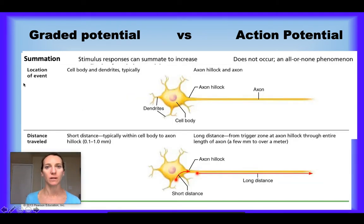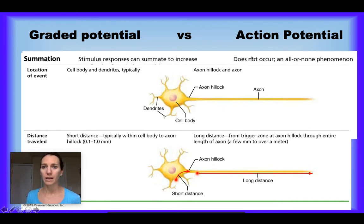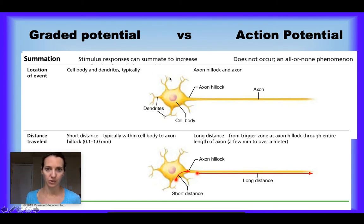Another key contrast is the location of the event. With a graded potential, they can come in via the dendrites or the cell body — a neuron can attach and stimulate any one of the dendrites or the cell body. In contrast, with an action potential, it's going to travel down the axon starting at the axon hillock. This is the only place where you're going to see an action potential travel. You're never going to see a graded potential traveling down the axon.